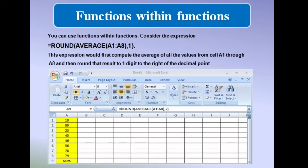Functions within functions: you can use functions within functions. Consider the expression equals to ROUND in bracket AVERAGE and then range A1 to A8, and then 1. The 1 is your digit to the right of the decimal point it will show.